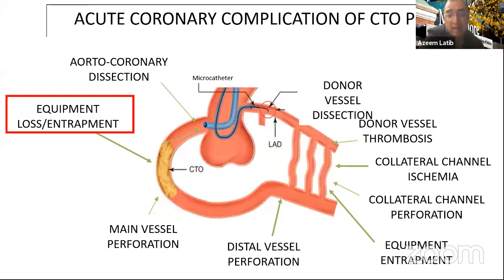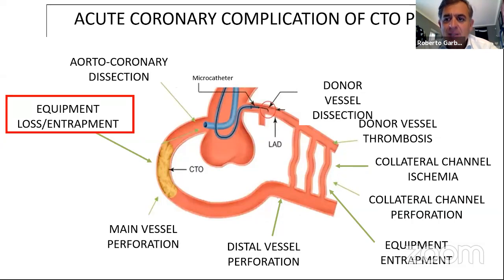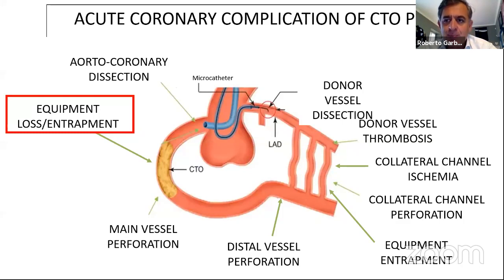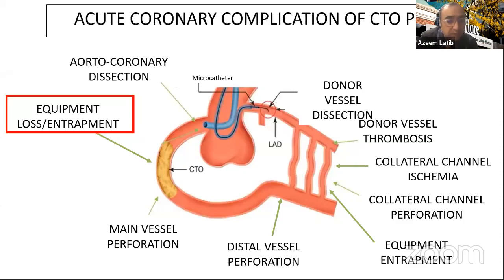Regarding the first perforation case — where the perforation appeared contained in the AV groove within the muscle — even though it wasn't going to the pericardial space yet, a covered stent was still placed. This is important for fellows: perforations into the myocardial muscle can develop a large expanding hematoma that compresses the right ventricle, causing cardiogenic shock. A myocardial hematoma is a really dangerous situation and cannot be overestimated.